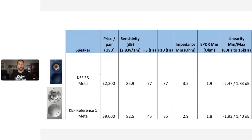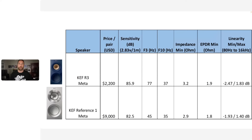Price per pair: $2,200 for the R3 Meta, $9,000 for the Reference 1 Meta. Sensitivity on the Reference 1 Meta is about 3 dB lower, meaning you'll need more amplifier power. The F3 and F10 on the KEF R3 Meta are a little bit higher than the Reference 1 Meta — the Reference 1 Meta gets lower in frequency and you definitely notice that additional bass. Impedance on the two is in the same ballpark, though the Reference 1 Meta is a little bit harder to drive. Both speakers will probably need a 4-ohm capable separate amplifier — I wouldn't suggest powering them off an AVR. The linearity is similar on axis between the two units.